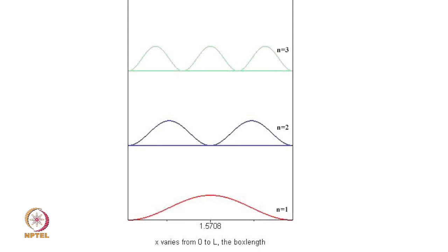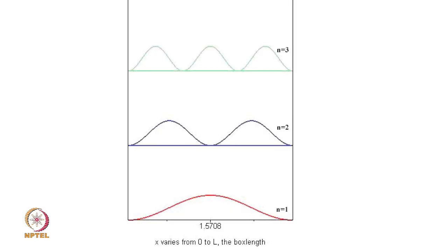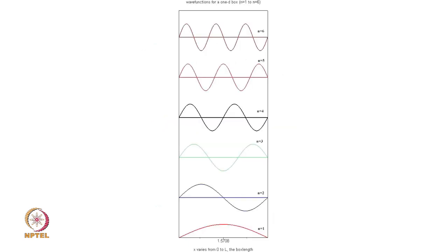When it is n equal to 2, please remember that if you look at the wave function, n equal to 1 is a half sin wave, n equal to 2 is a full sin wave, this is a 3 half sin wave and so on.